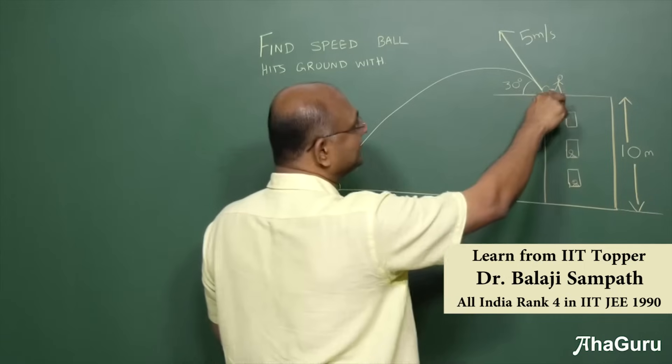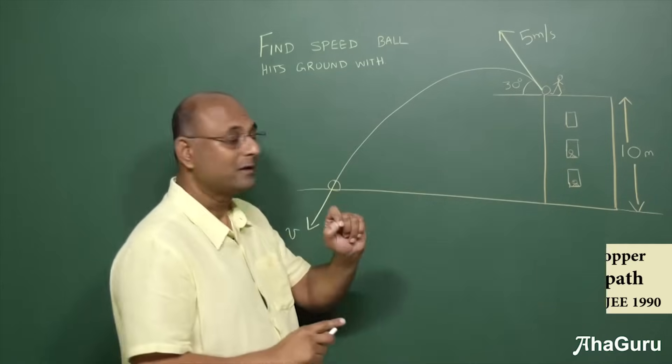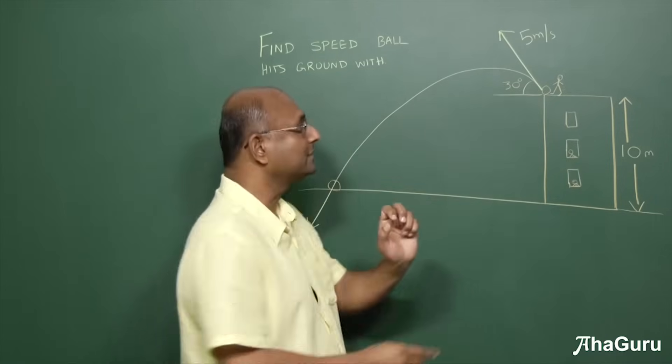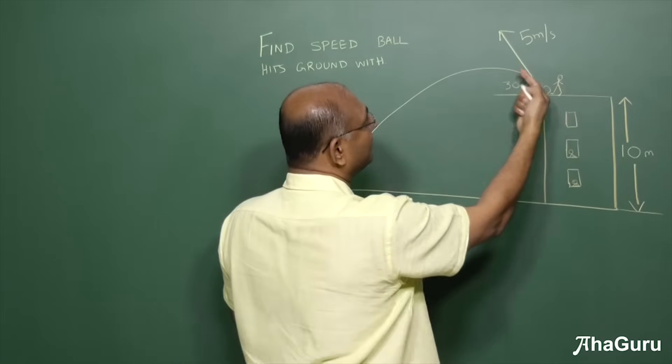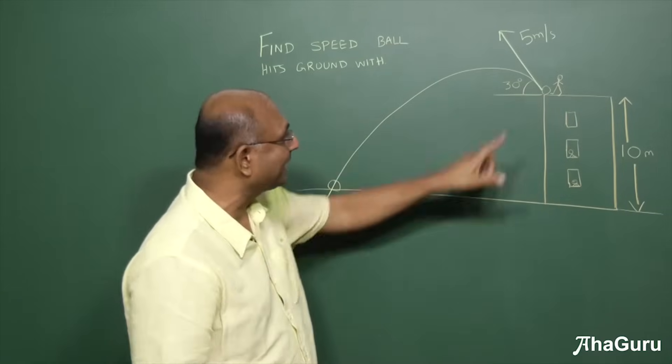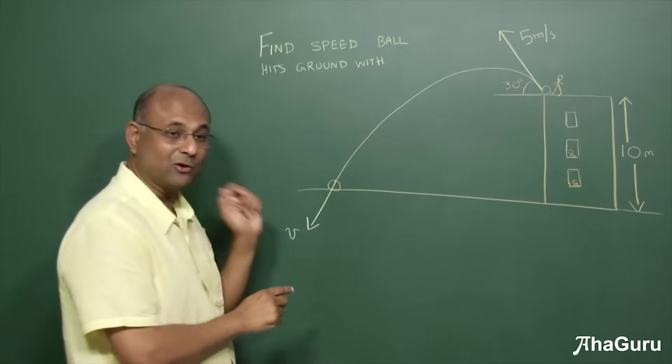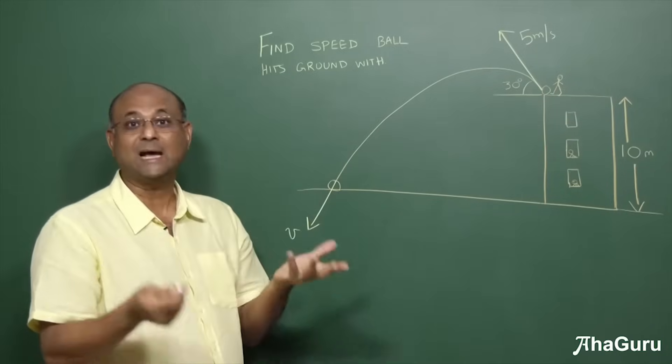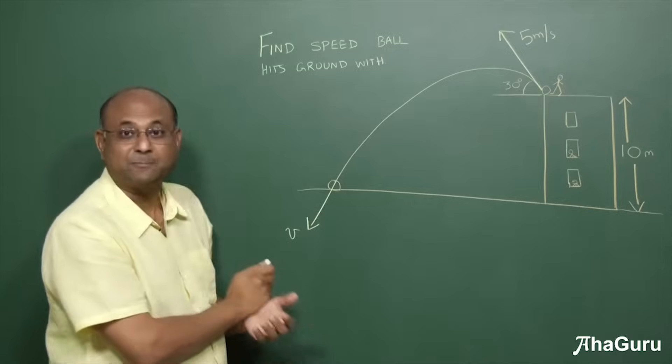Here, I have this person who is kicking a football from a building of height 10 meters. Now, the ball goes off with a velocity of 5 meters per second at an angle of 30 degrees. It goes and hits the ground with a speed V and the question is asking us, find what is this speed V?